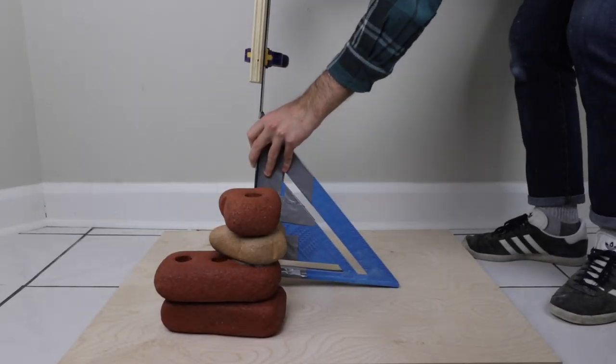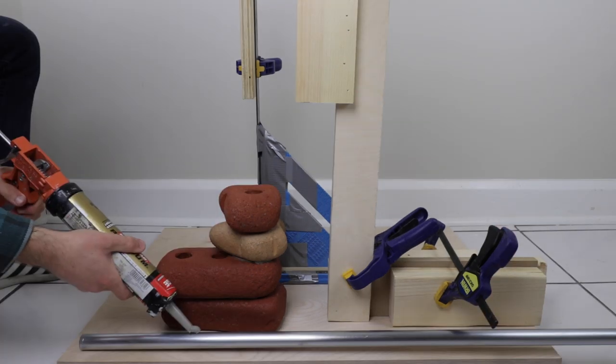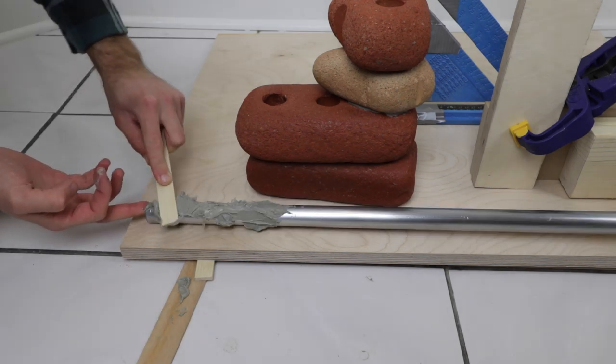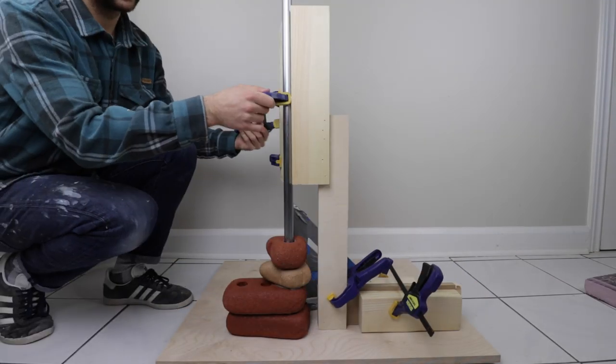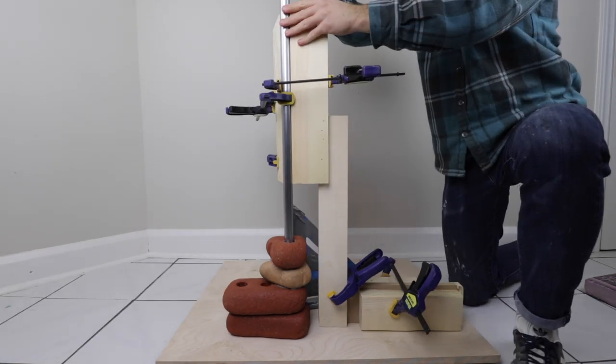Off camera, I made some makeshift brackets to help me support the conduit as I installed it into the brick base. I applied some more PL to the bottom of the conduit, being sure to spread it thoroughly before inserting the conduit into the brick base. I then used some clamps to secure the conduit to the brackets that I made. This would help hold it at 90 degrees while it cured.